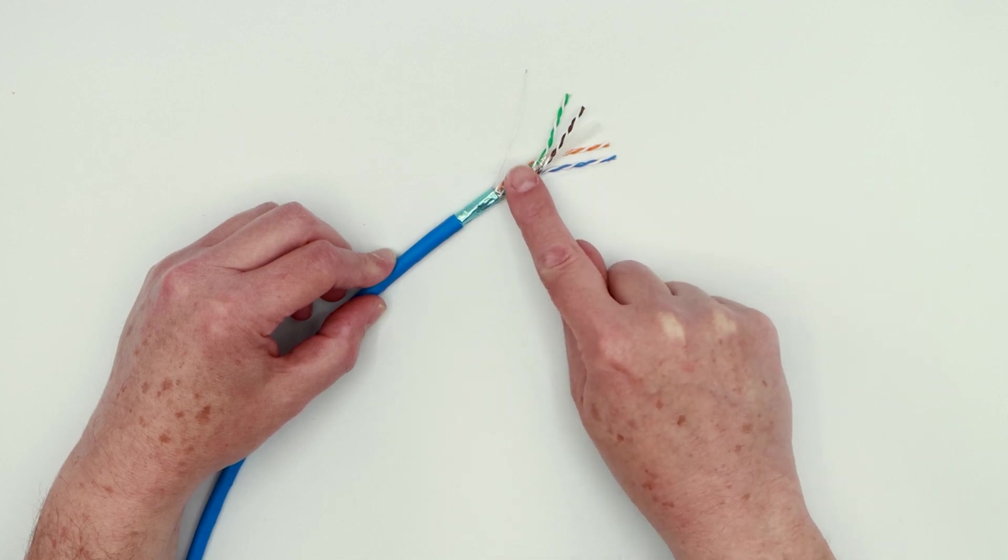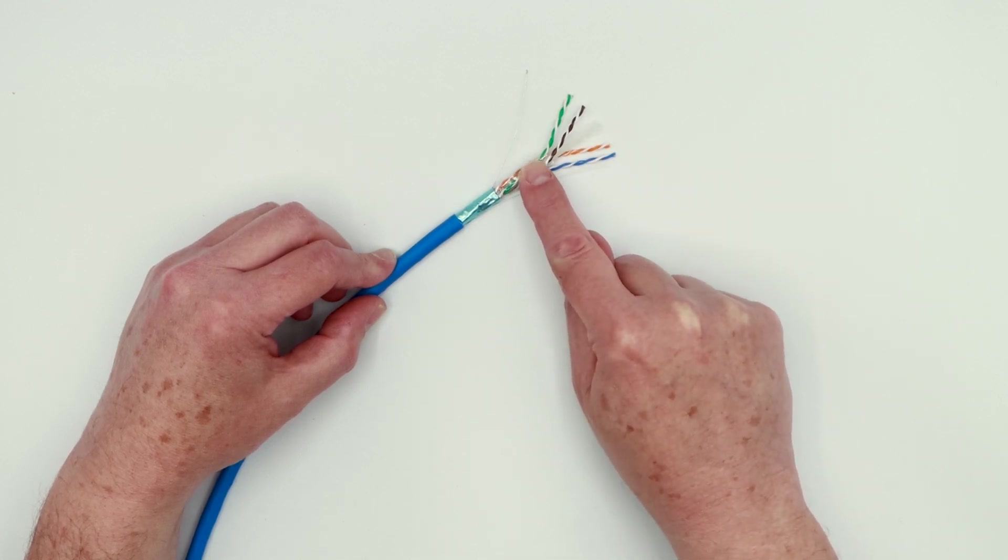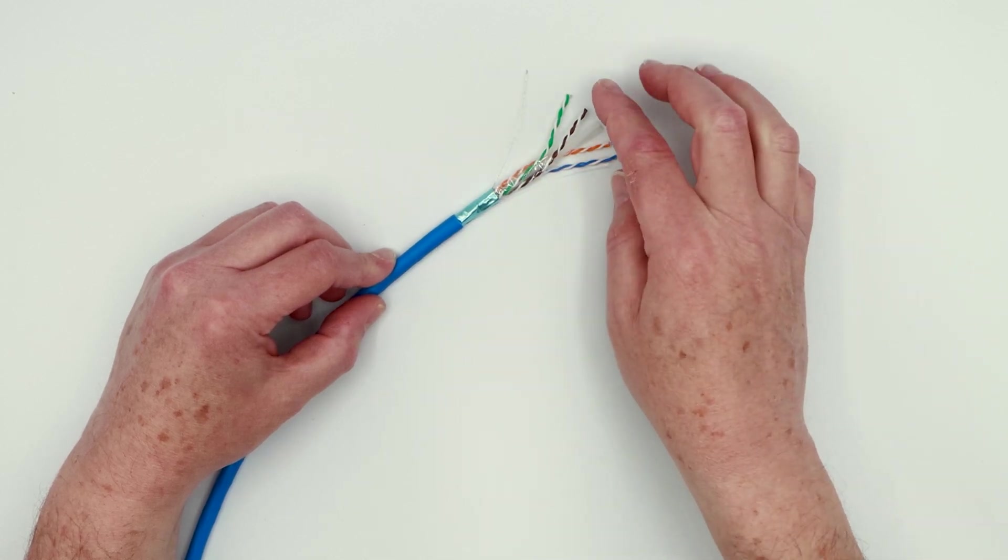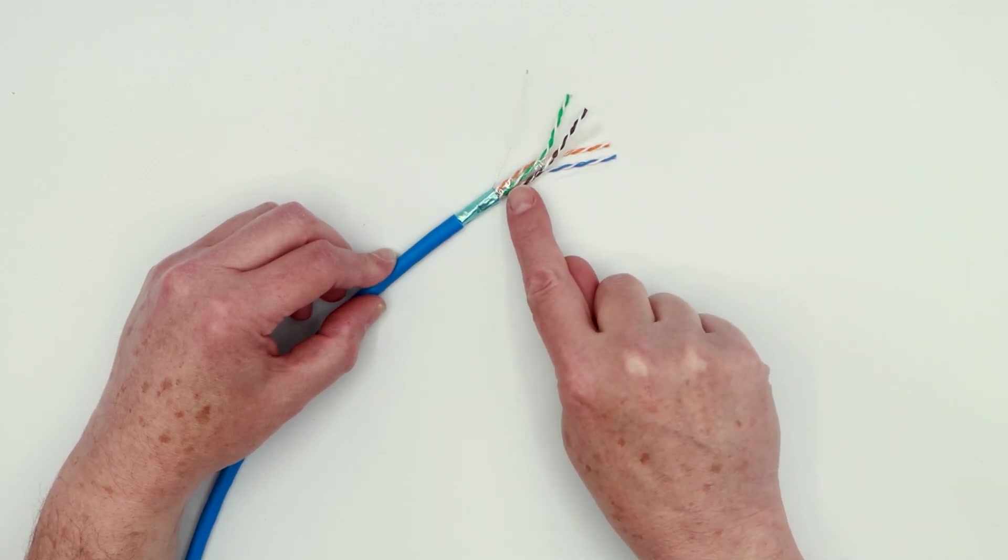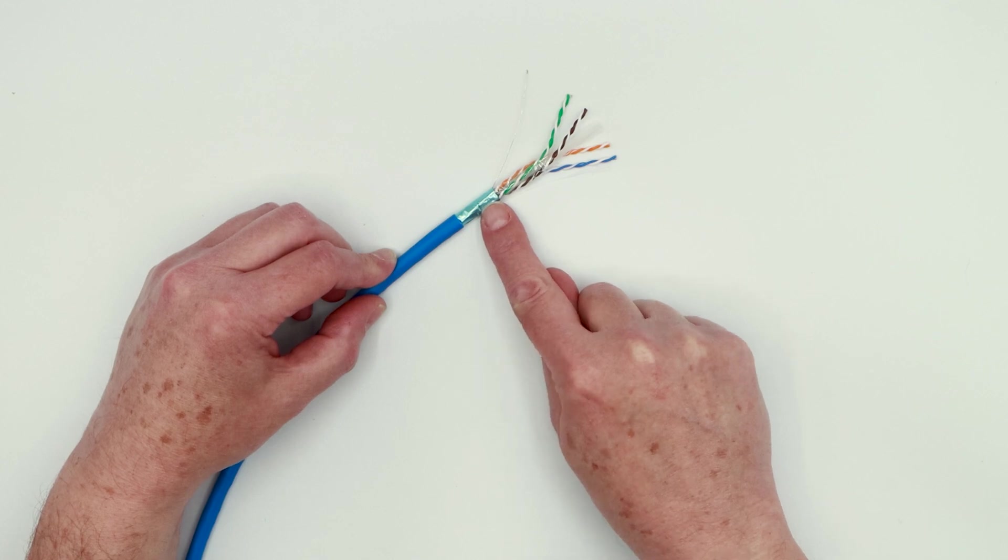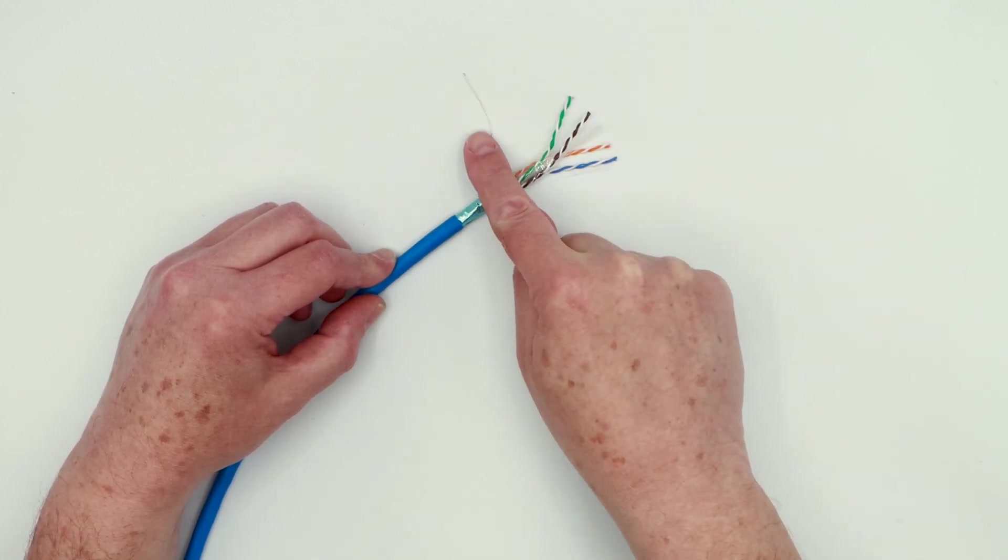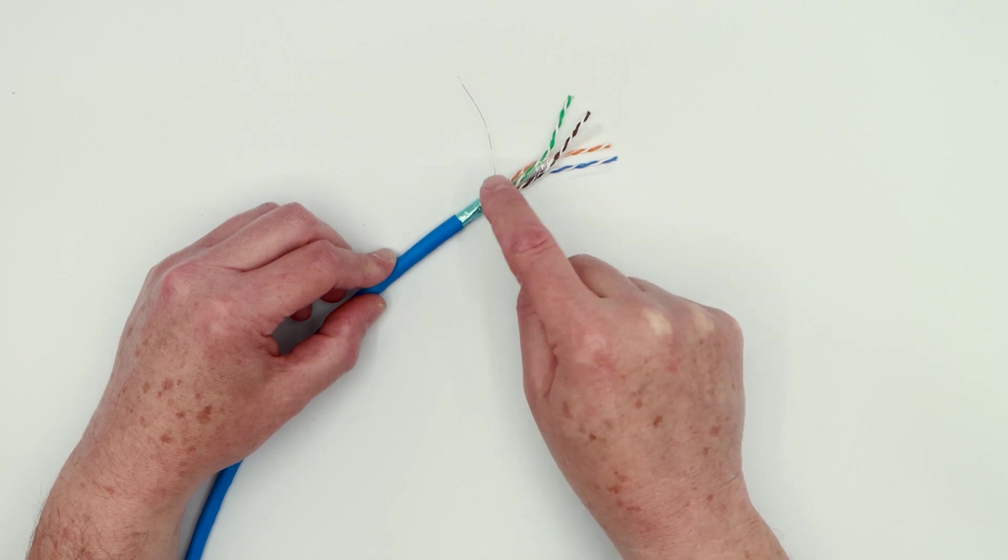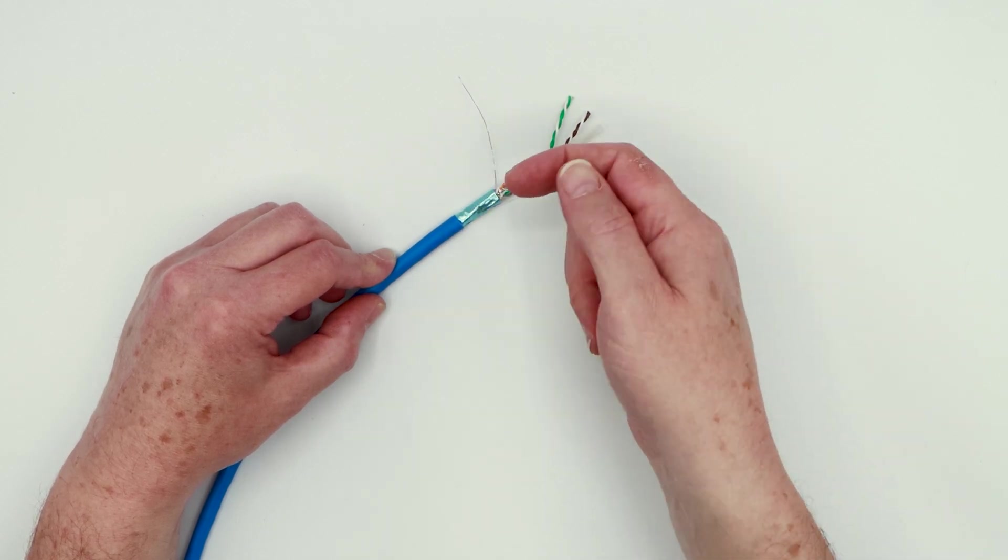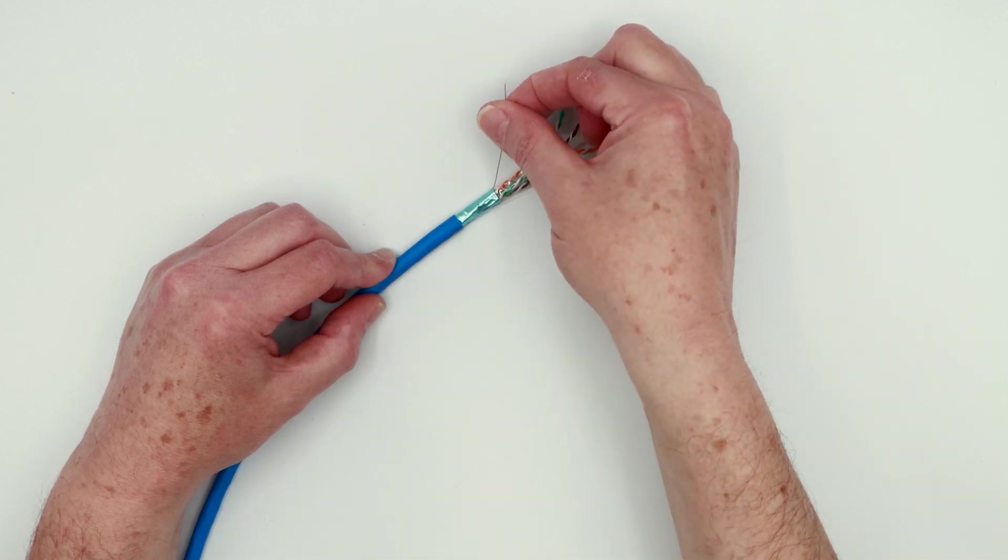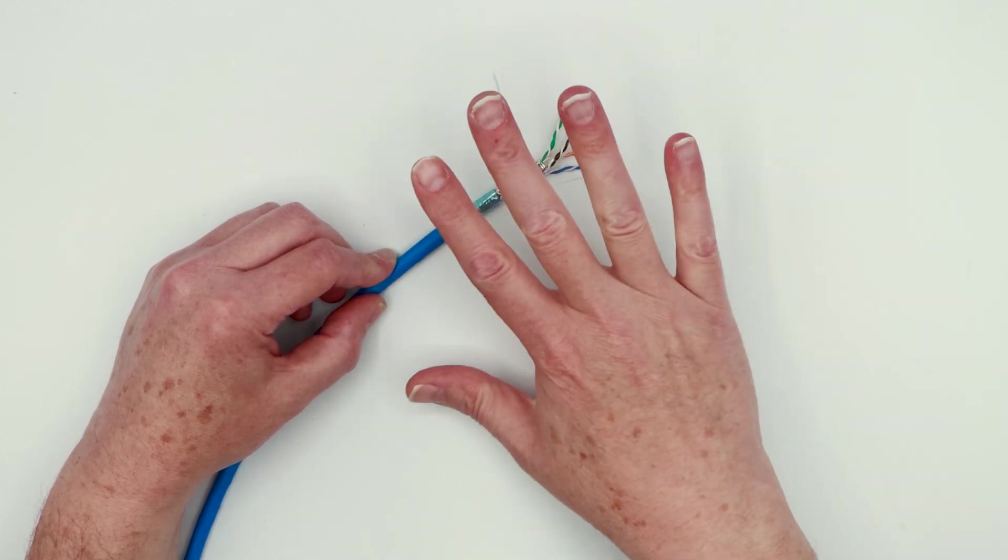And then under that, you have a dielectric wrap. Basically, it's polyester wrap tape. And that is to keep the conductors from contacting the foil. And then you also have a ESD drain wire, which works in concert with this cable. It makes contact with the cable shield on the inside of it all the way through the length of the cable.